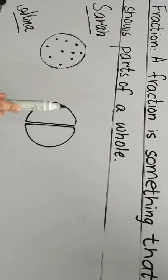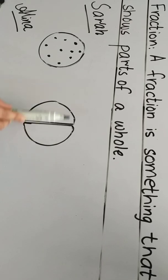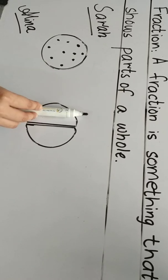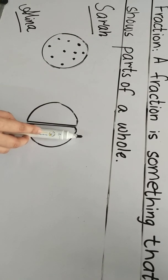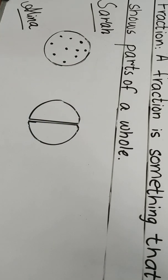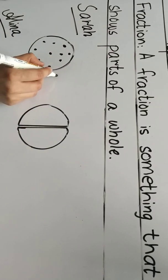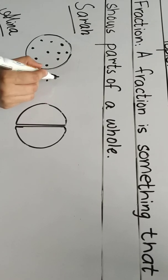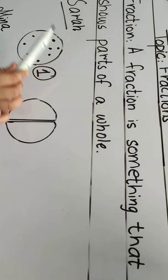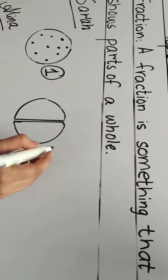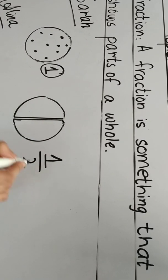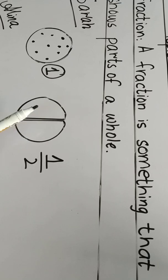Now she has split the pizza into two parts. This is one half and this is one half. She splits it into two parts — it's one by two.